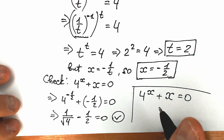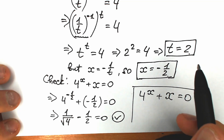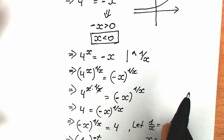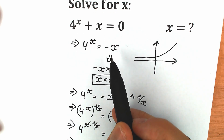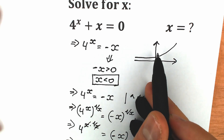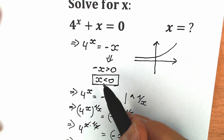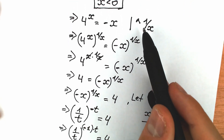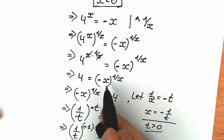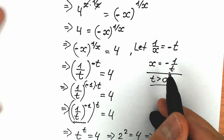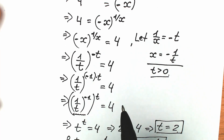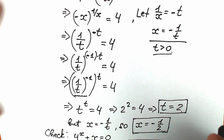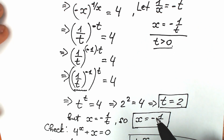This is a great question to practice geometry, exponential functions, and power rules. To summarize: we first established x must be negative from the range of the exponential function. Then we raised both sides to the power 1 over x to isolate the constant. Next, we used the substitution 1 over x equals minus t, simplifying to t to the power t equals 4, giving t equals 2. Back-substituting, we get x equals minus one half.